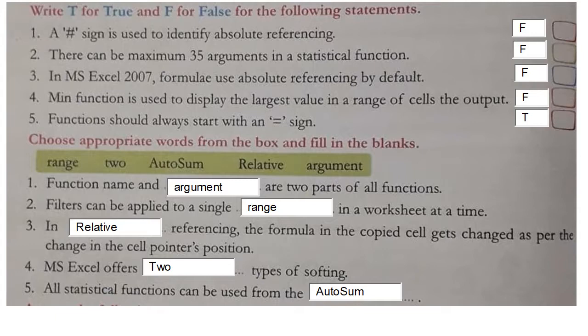Third: in relative referencing, the formula in the copied cell gets changed as per the change in the cell pointer's position. Fourth: MS Excel offers two types of sorting. Fifth: all statistical functions can be used from the AutoSum list.